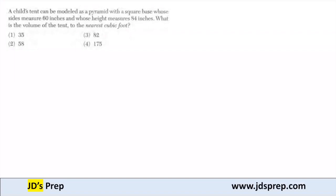We want to know the volume of the tent to the nearest cubic foot. So first thing is let's take our sides and our height and convert them into feet. So if I have my side to be 60 inches, if I divide by 12, that is equivalent to 5 feet.